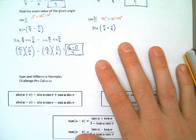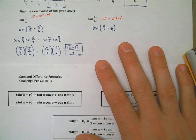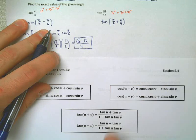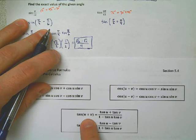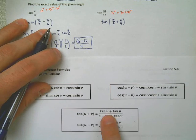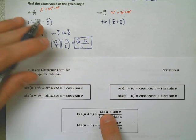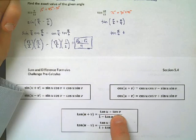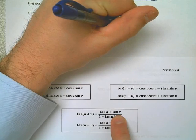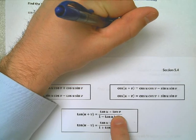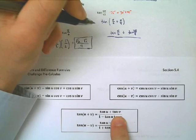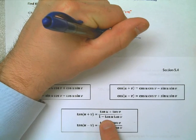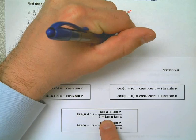So this is the tangent of π/6 plus π/4. 1/6 plus 1/4 must be 5/12ths. Now I need to go to my tangent formulas, and I'm adding. So it's going to be this formula here, tangent of 45 plus 30, or 30 plus 45. So it's going to be tangent of the first one, tangent of π/6 plus the tangent of π/4, all over 1 minus the tangent of π/6 times the tangent of π/4.